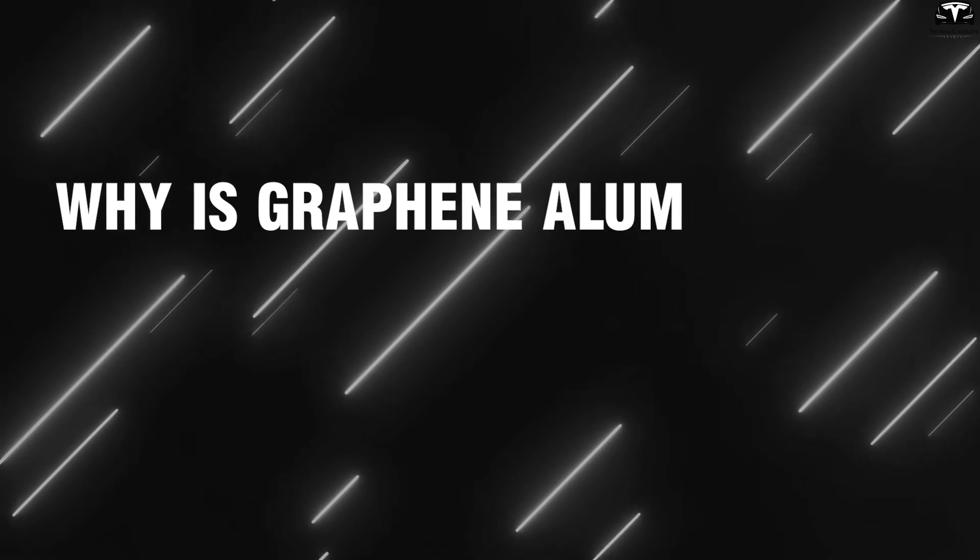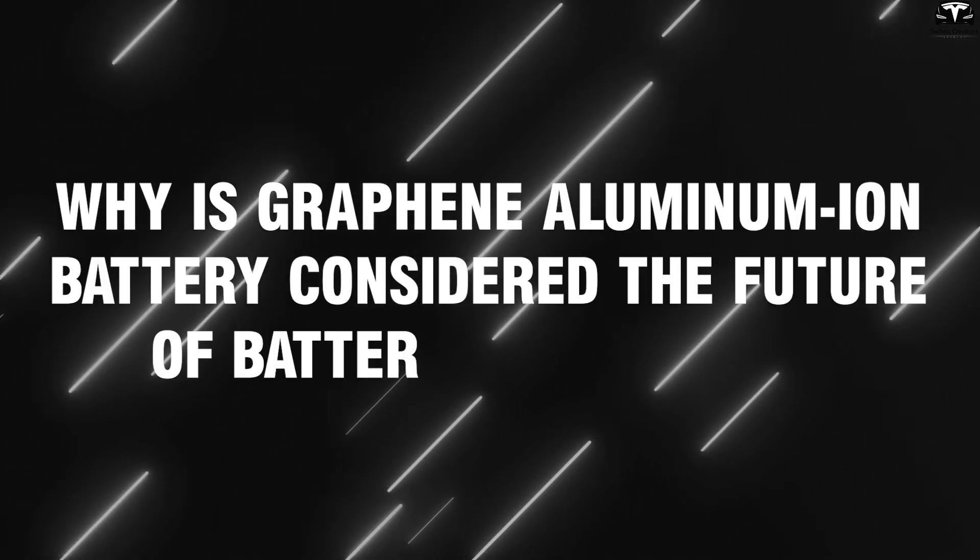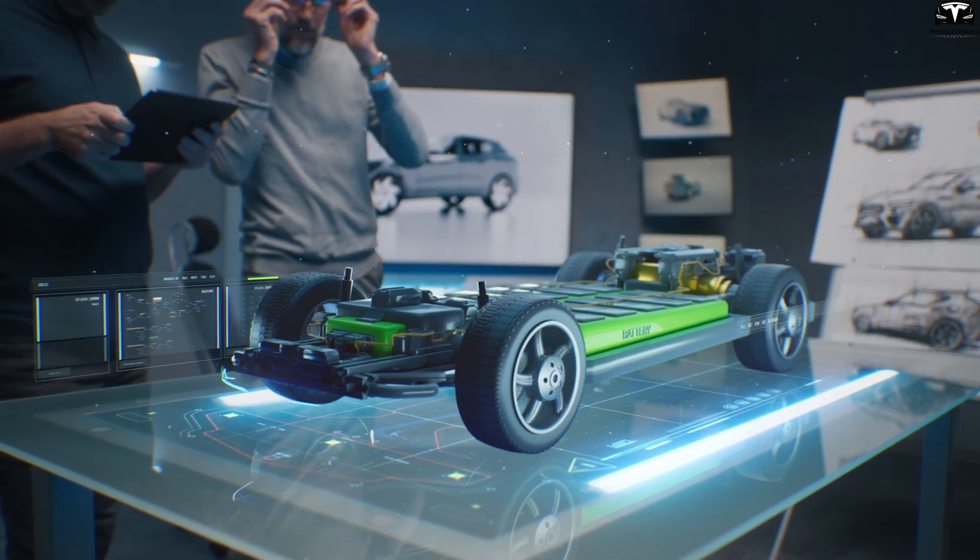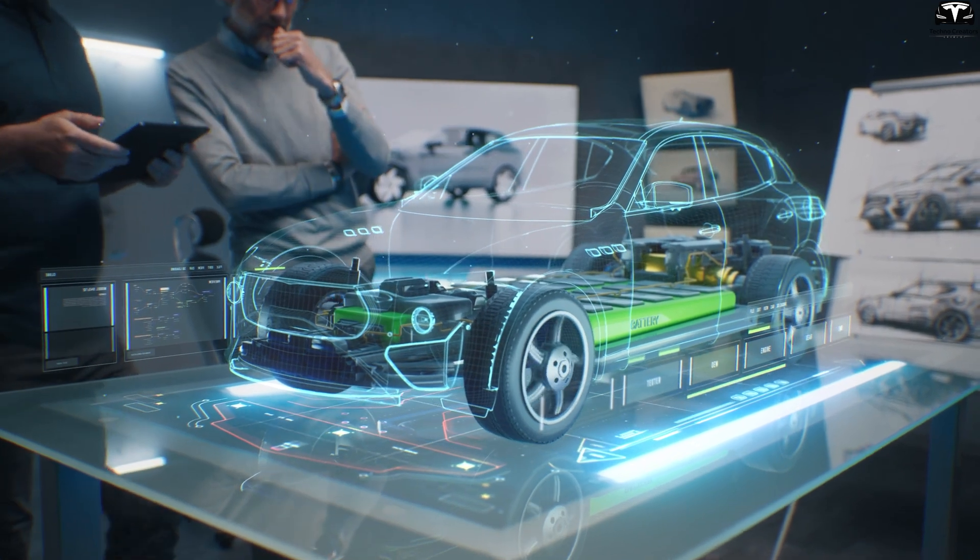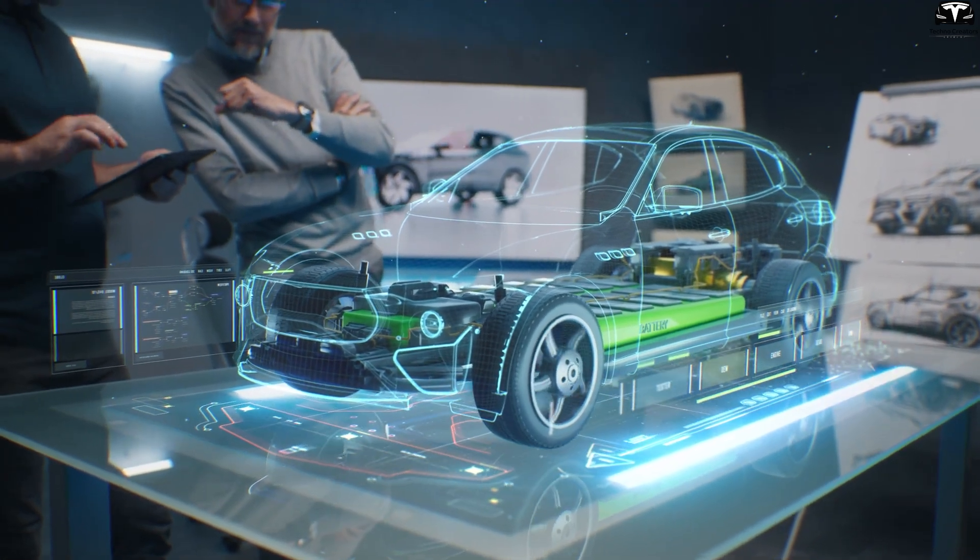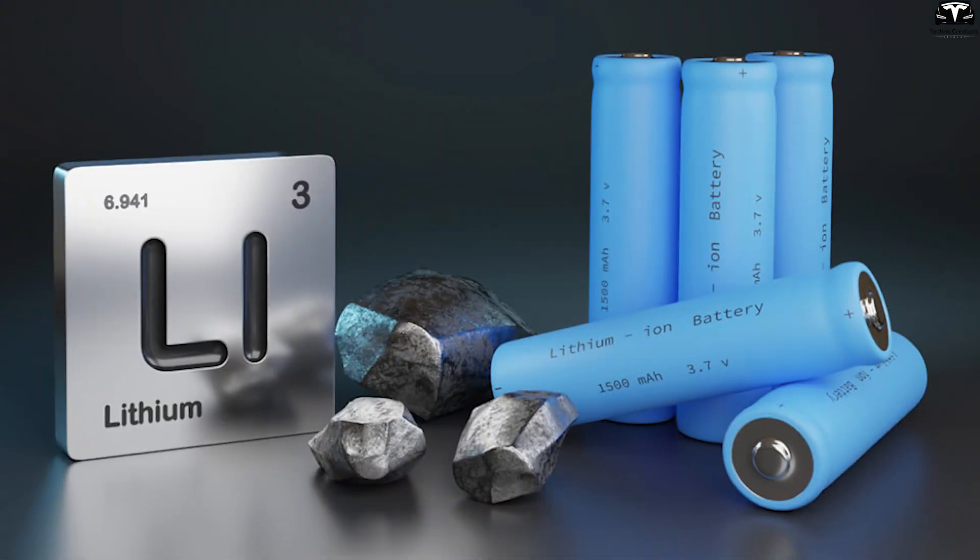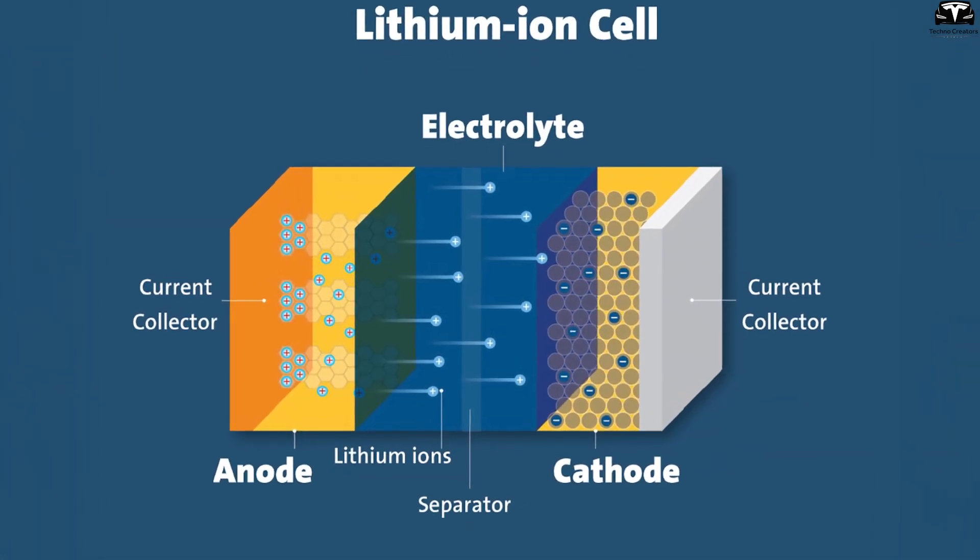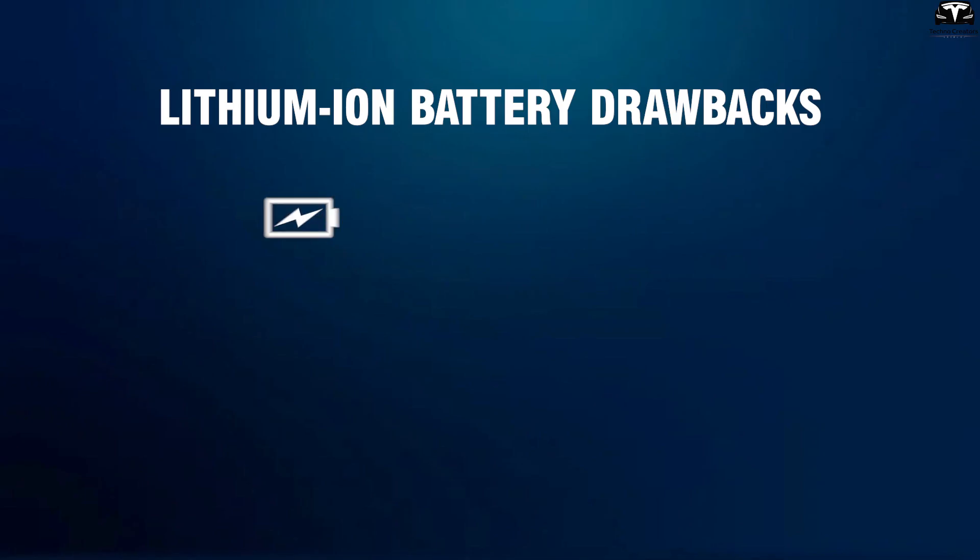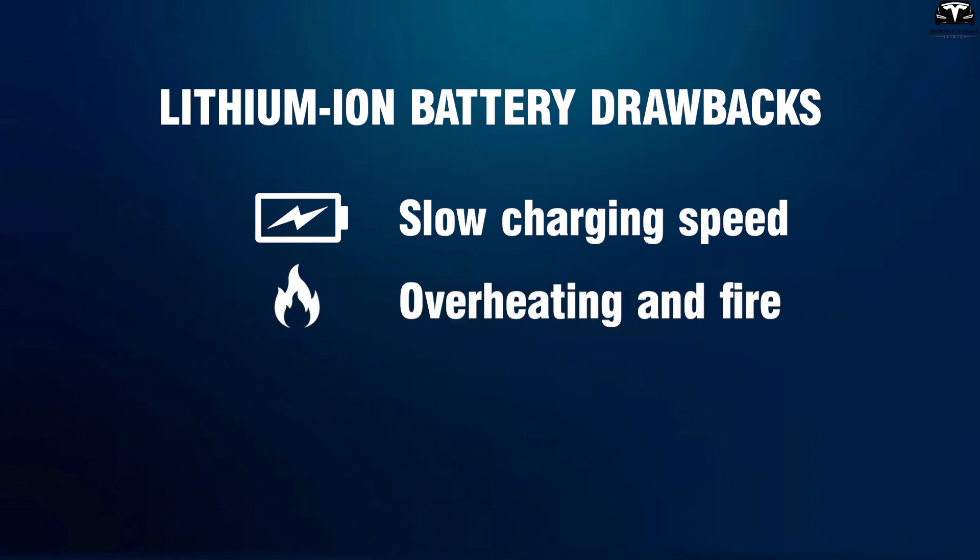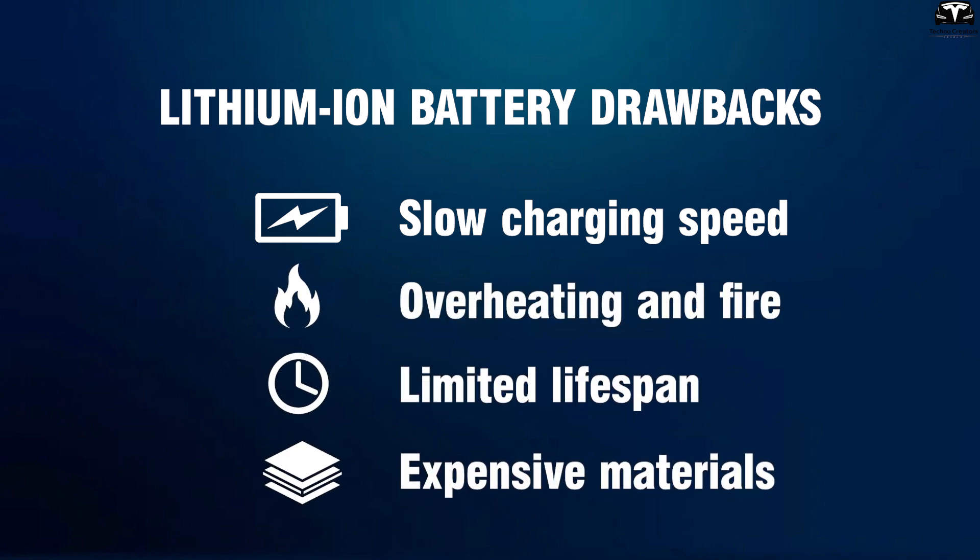Why is Graphene Aluminum Ion Battery considered the future of battery technology? Electric vehicle technology today relies heavily on advancements in battery technology. While lithium-ion batteries dominate the market thanks to their high energy density, they still have many drawbacks: slow charging speeds, risks of overheating and fire, limited lifespan, and dependence on expensive materials like lithium, cobalt, and nickel.